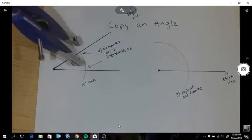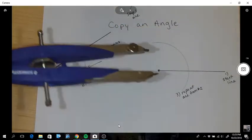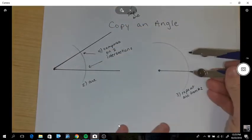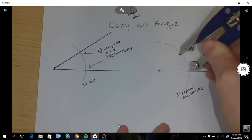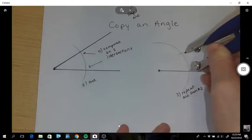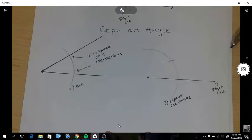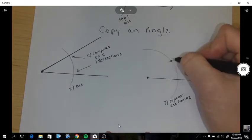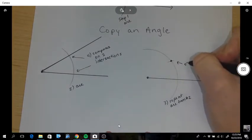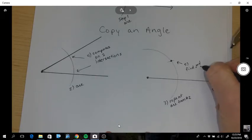Okay, then I take my compass, don't change that length, and this is the one intersection. So where's the second intersection? You make a little mark. And so step five is find that second intersection.